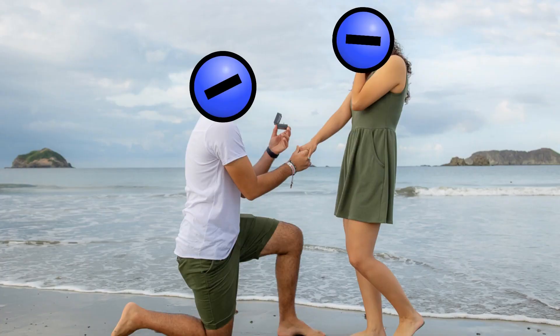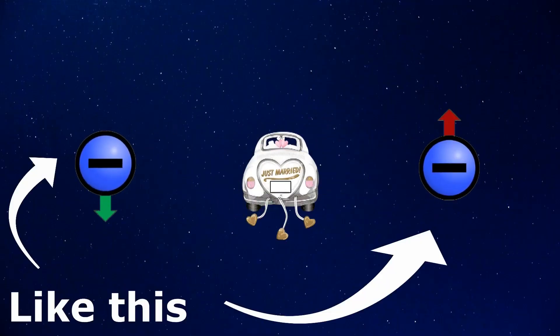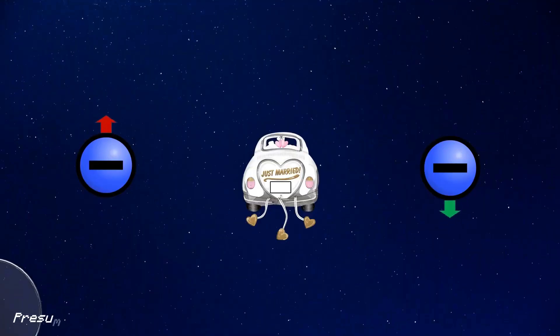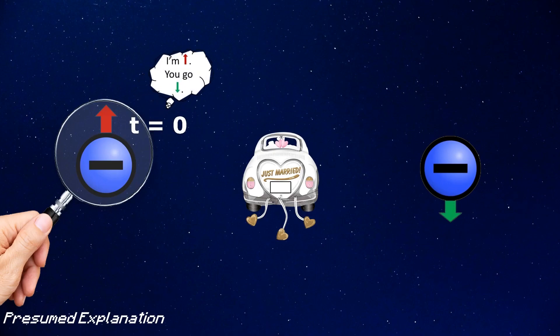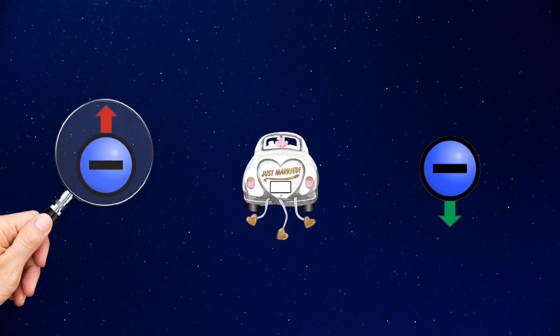This is quantum entanglement. Well, it is after you replace the twins with electrons and their uncertain names with superposed spins. In an entangled pair, these spins must be opposites to conserve angular momentum. And so, just like the analogy, measuring the state of one particle instantaneously influences the other to assume the opposite state, regardless of distance.